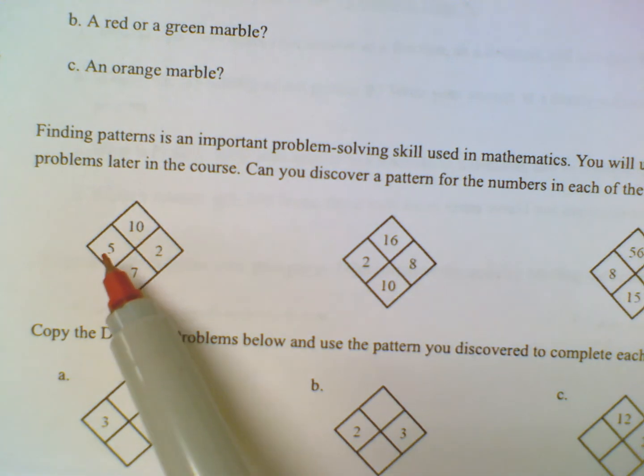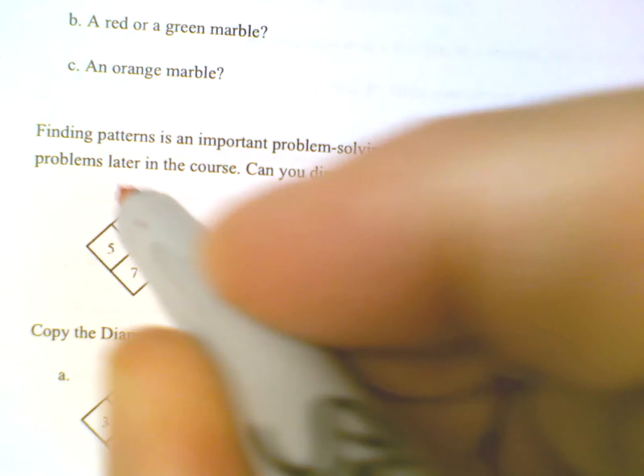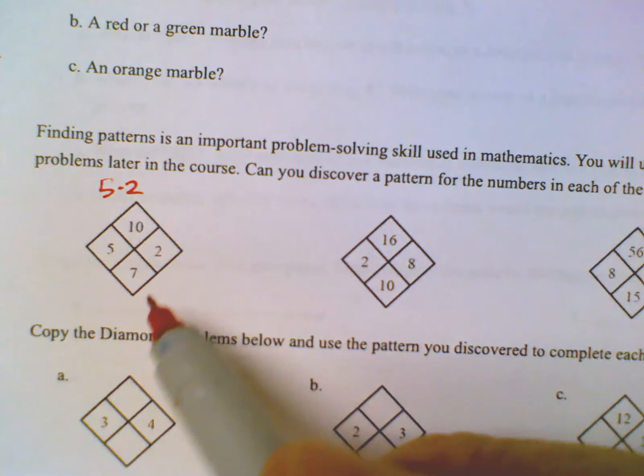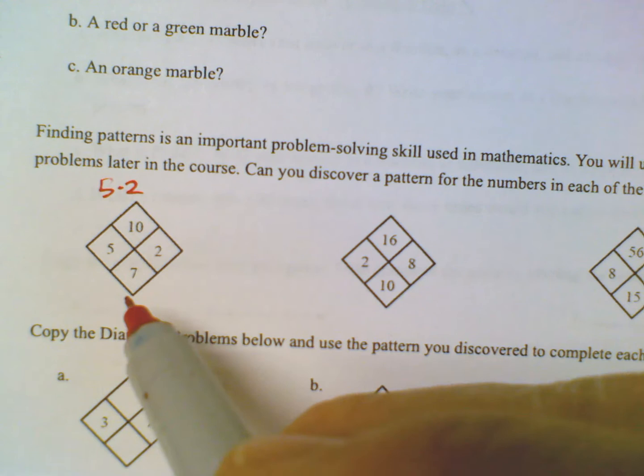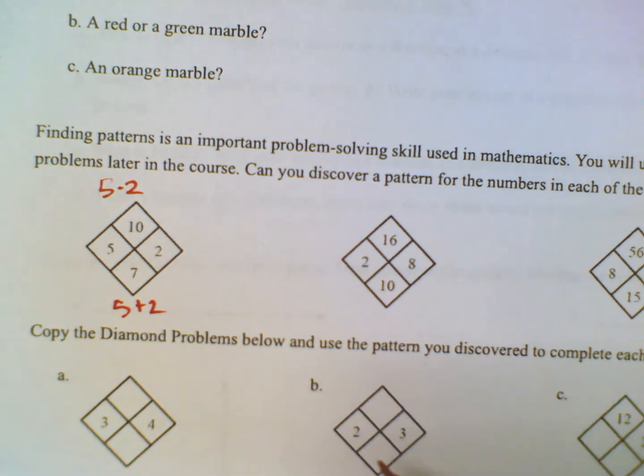Once you see it, you're going to go, aha. So 5 times 2 is 10. So 5 times 2 on top is the 10. And then now do you see the bottom? The bottom is 5 plus 2 is 7.